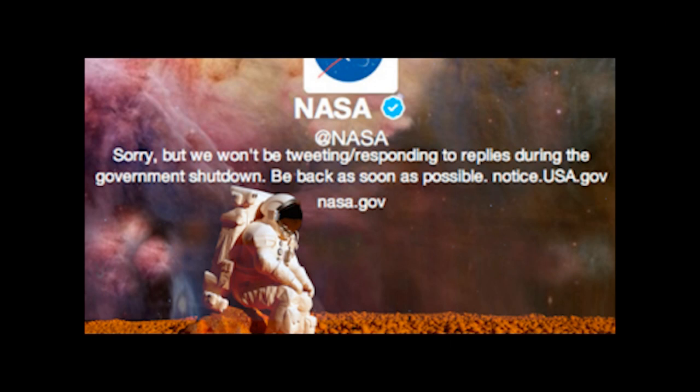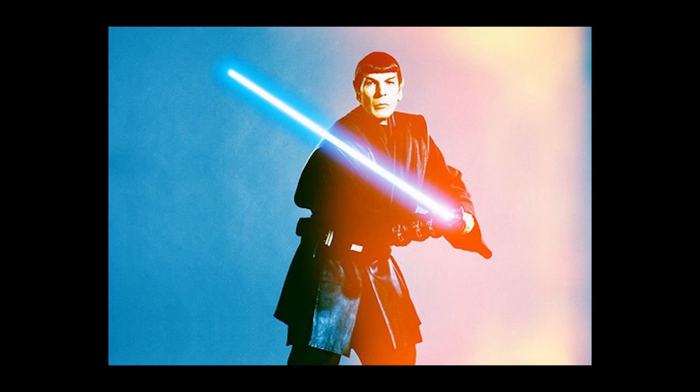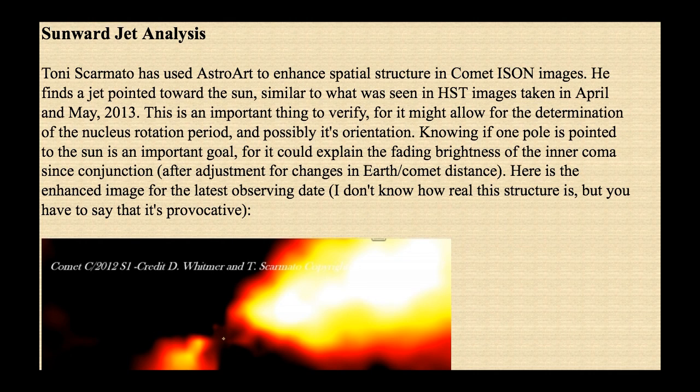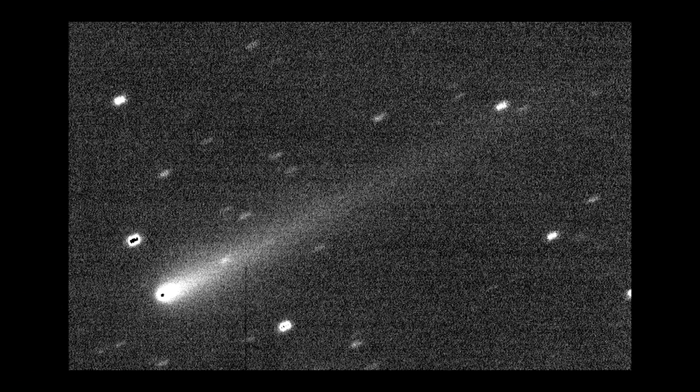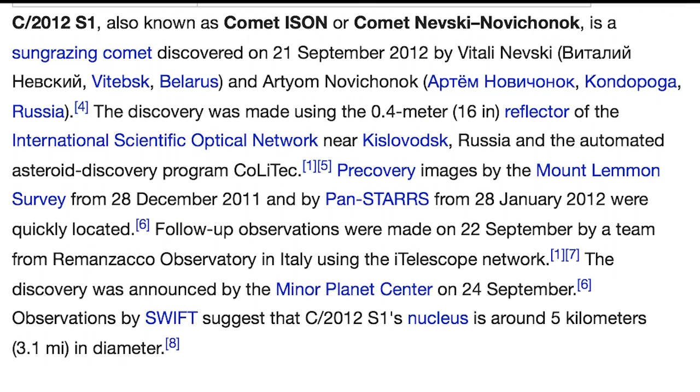Five. NASA is back in action. Six. Comet ISON is rotating on one pole slash axis. WTF? Number seven. The jet rank antitail disappeared and then came back. WTF? Asterisk. Eight. Wiki is calling it the Nevski and Novichonok comet.